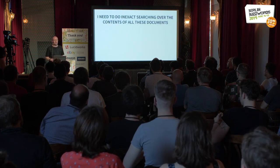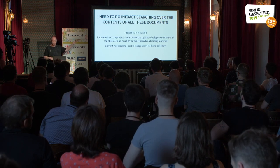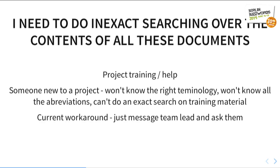I need to do a whole load of inexact searching over these documents. For example, I've got a whole bunch of project training and help content, and someone new to the project comes in and needs to do something using a general term, but the training manual uses project-specific naming. We've got a lot of abbreviations and weird naming in our company — I think a lot of you have that too. The workaround at the moment is that people just message their team lead and say 'how do I do this?' — there are some definite scaling problems with that.